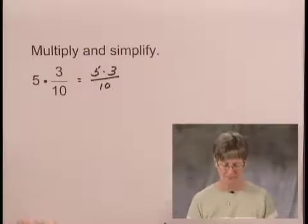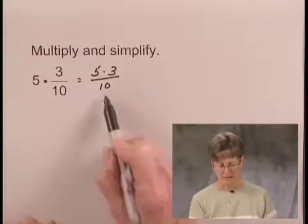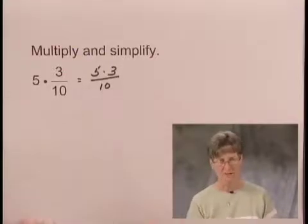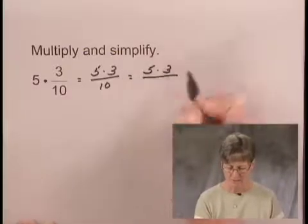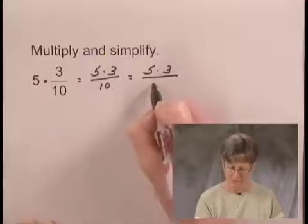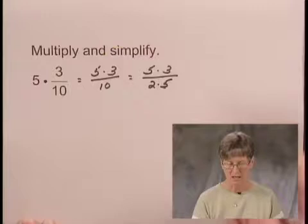And now that we've formed the product, we would like to simplify it if we can. I see that there's a factor of 5 in the number 10 in the denominator. So I can rewrite this fraction as 5 times 3, just rewriting the numerator. And I'll write 10 as 2 times 5.